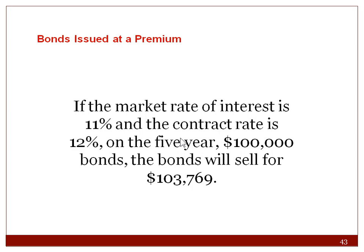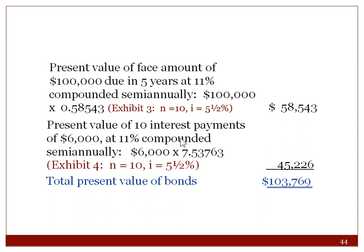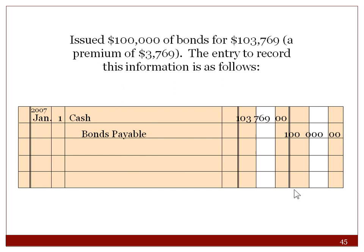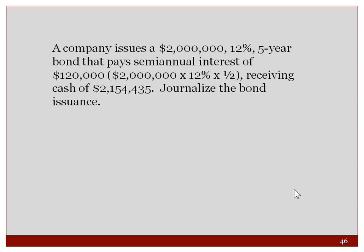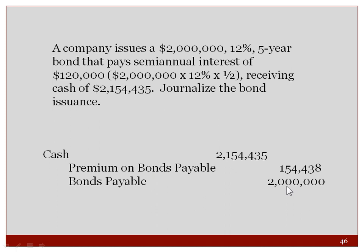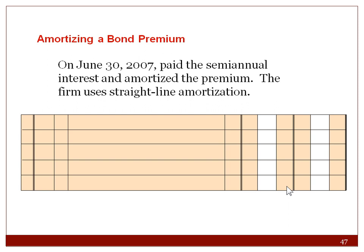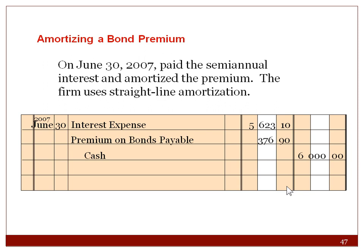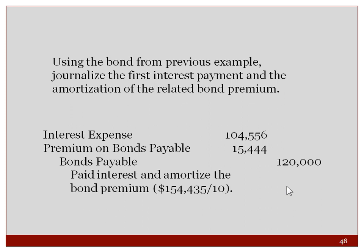If the market rate is 11% and the contract rate is 12%, the bond sells at a premium — market rate less than contract rate. The present value calculation uses the market rate; in this example, the bond is sold at $103,769. Journal entry: debit Cash $103,769, credit Premium on Bonds Payable and Bonds Payable. For the semi-annual interest payment with premium amortization using the straight-line method: debit Interest Expense, credit Premium on Bonds Payable, and credit Cash.